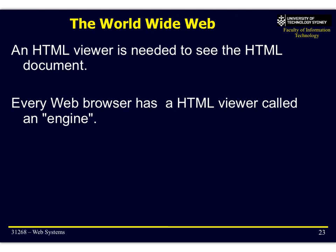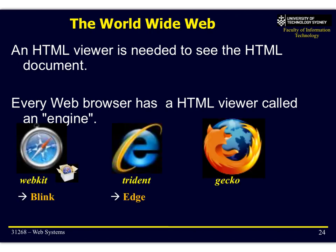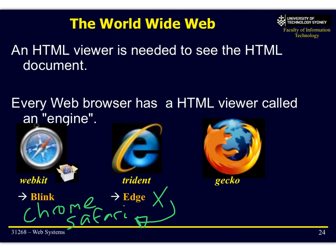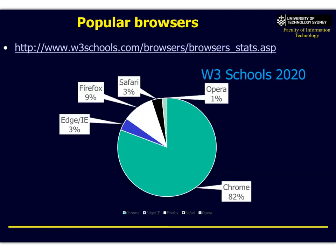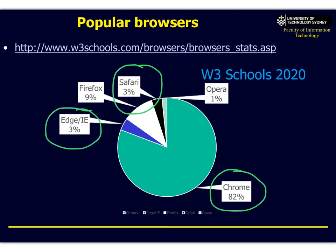Embedded within each browser is an HTML viewer called an engine, or web engine. The three most popular web engines are WebKit, which Chrome and Safari are based on; Microsoft Edge, which has actually been replaced with WebKit as well; and Gecko, used by Firefox. As you can see from W3 Schools 2020 data, the most popular by far is Chrome, which uses WebKit, followed by Safari — also WebKit but a different version — then Edge, and Firefox with Gecko. There's also Opera.